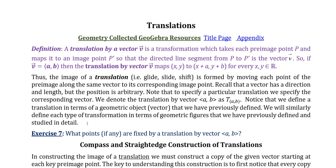So the image of a translation, generic, informal words might be glide, slide, shift, scoot. But translation is the technical term. It's formed by moving each point of the pre-image along the same vector to its corresponding image point. Recall that a vector has a direction and length, but the position is arbitrary. So to specify a particular translation, we specify the corresponding vector. So we can use this notation to denote a translation by vector (a, b) as t sub (a, b), like that, vector (a, b). Notice that we define translations in terms of a geometric object, a vector, that we have previously defined. We will similarly define each type of transformation in terms of geometric figures that we have previously defined and studied in detail.